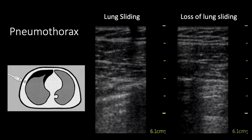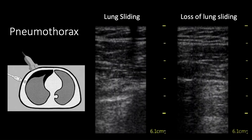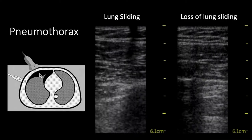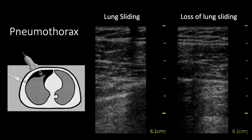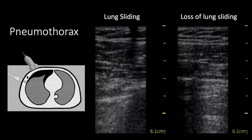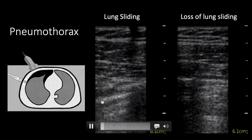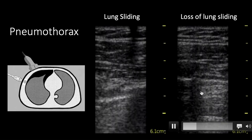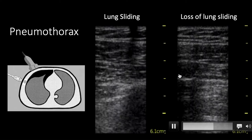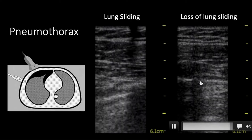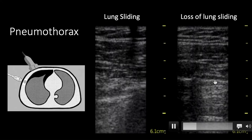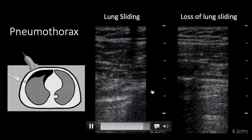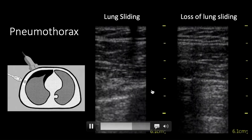Let's look at what pneumothorax appears like. If you put the probe on this patient, the lung has fallen away from the chest wall, so you'll no longer see the sliding of the visceral and parietal pleura. Here's a rib shadow and here's the pleural line. This is normal lung sliding or shimmering on one side. On the other, here's a rib, here must be the pleural line, and there's no movement because it's only a single pleura without visceral and parietal sliding against each other.